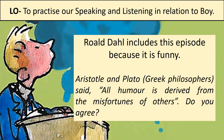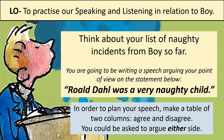Using your list of naughty incidents from Boy so far, you're going to have a go at writing a speech with this title: 'Roald Dahl was a very naughty child.' Think about whether you agree or disagree with that argument, and you're going to write a speech to explain your view. In order to help you plan your speech, you'll use the table in your workbook with sides for agree and disagree. Think about both sides: do you agree that Roald Dahl was a very naughty boy, or do you disagree? You've got that list from earlier to help with the agree side. But also consider: does he only do things to people who deserve it? Does he do things for a laugh, not to cause actual pain? Think about what he did to Mrs Pratchett — did he feel guilty afterwards? That might help with the disagree side.